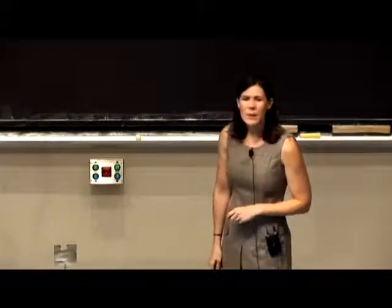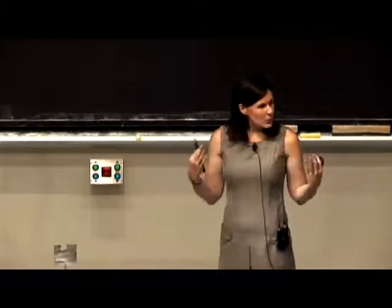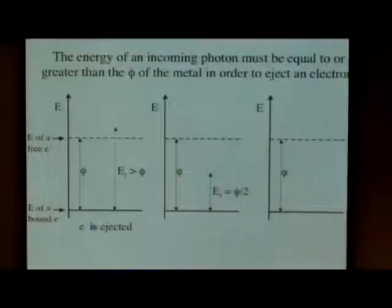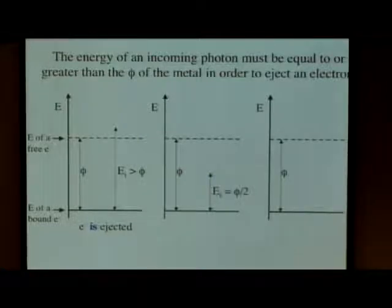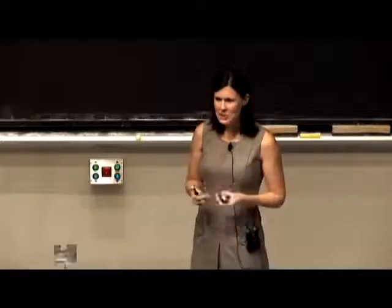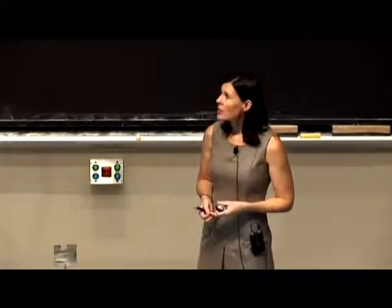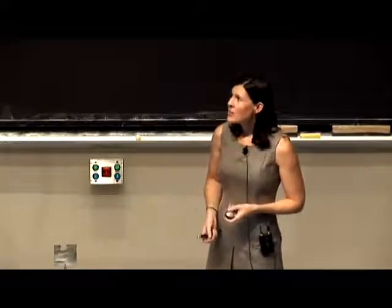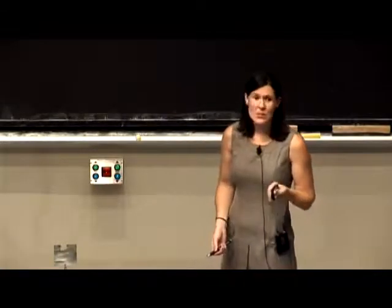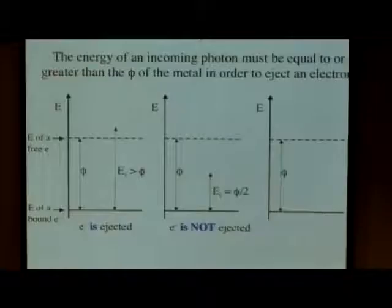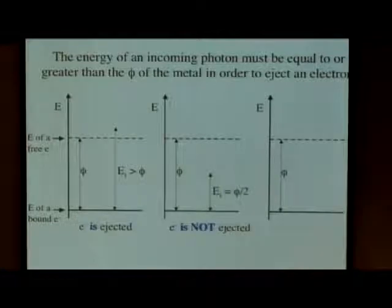In the second case, we have the incident energy at some amount that's less than the work function — in this case, we're showing one half of the work function. In this case, we don't have enough energy to eject an electron, so an electron is not ejected.